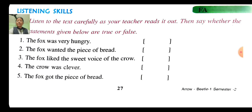Second number: the fox wanted the piece of bread. Did the fox want a piece of bread? Yes, the fox wanted a piece of bread — because the fox was very hungry. So the statement is true. Write in the bracket T-R-U-E, true.